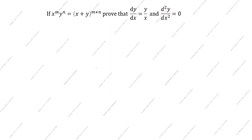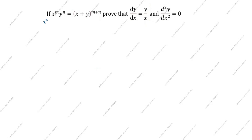Hi friends, welcome to my channel Excellent Ideas in Education. Today we are going to solve this differentiation problem. If x power m into y power n equals open bracket x plus y close bracket m plus n, prove that dy by dx is equal to y by x, and d square y by dx square is equal to 0.